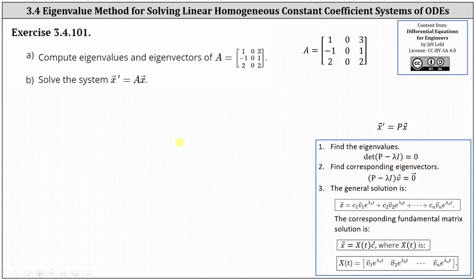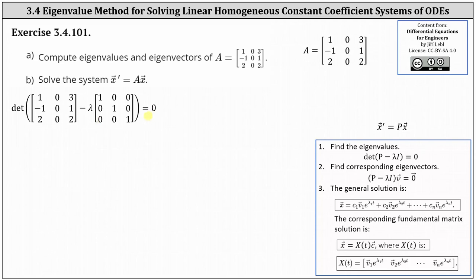Let's go ahead and set this up. We have the determinant of the difference of matrix A and lambda times the three by three identity matrix equals zero. Simplifying inside the parentheses, we get the determinant of the three by three matrix where the first row is one minus lambda, zero, and three. The second row is negative one, negative lambda, one. The third row is two, zero, two minus lambda.